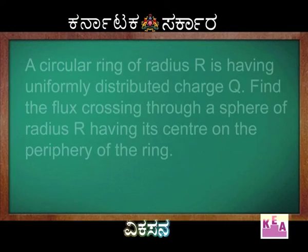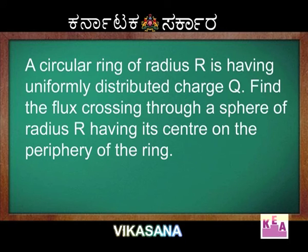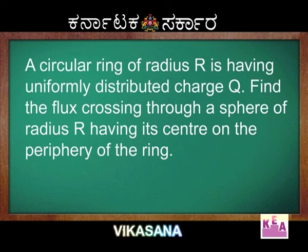Let me now go to the next question. A circular ring of radius R is having uniformly distributed charge Q. Find the flux crossing through a sphere of radius R having its center on the periphery of the ring.